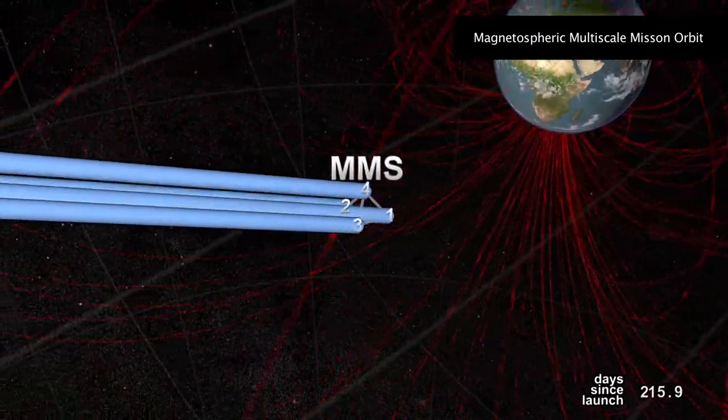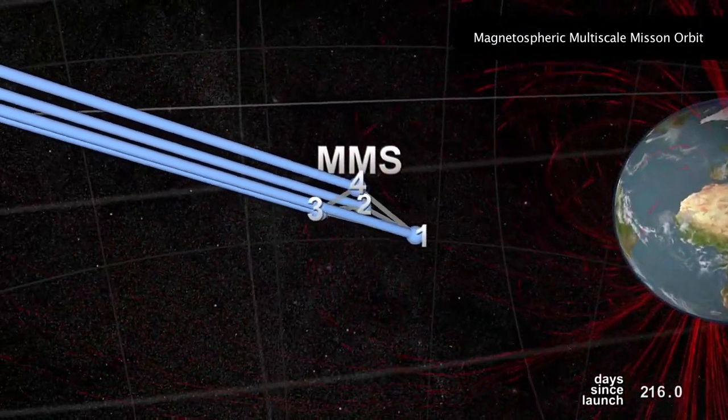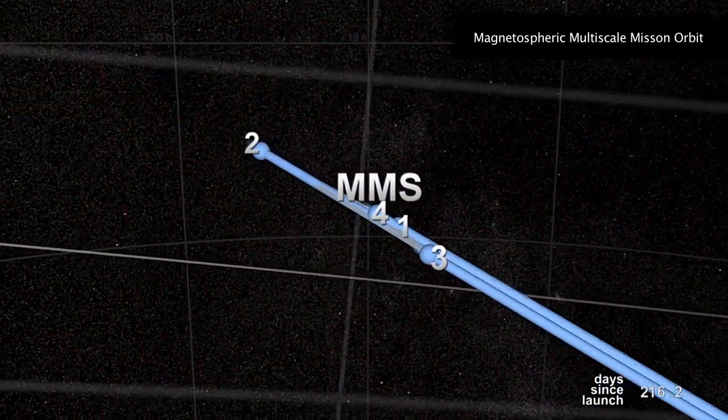To catch these explosions in action, the MMS orbits were designed in two phases: a day-side phase and a night-side phase.